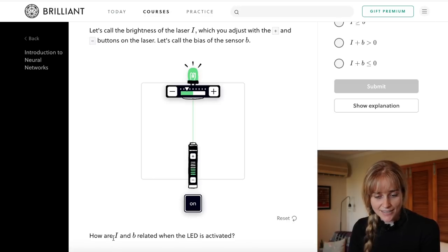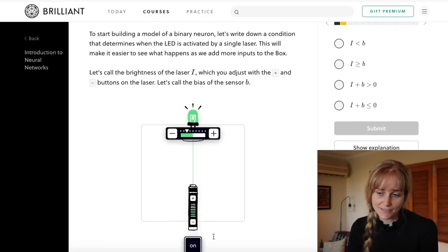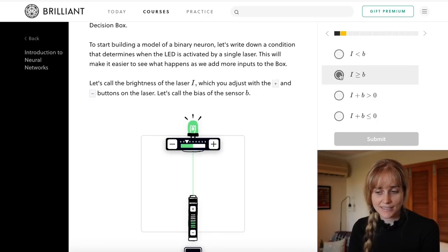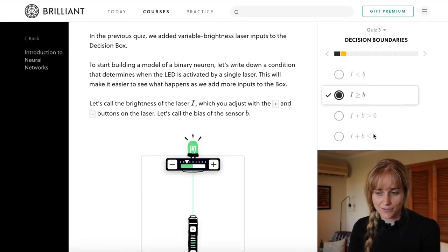That enables us to answer how our intensity and the bias are related when the LED is activated. Well, it's when the intensity is greater than or equal to the bias level.